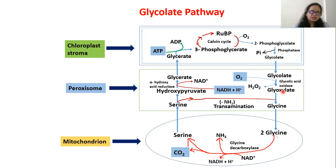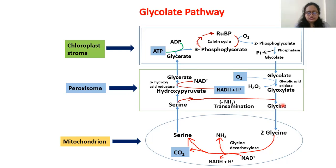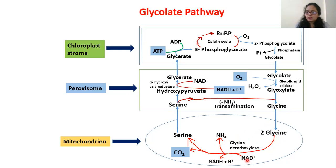Then that glyoxylate converts into glycine by a process known as transamination, meaning an NH2 group is added. That glycine then enters the mitochondria. In mitochondria, two molecules of glycine, in the presence of the enzyme glycine decarboxylase, release one CO2 molecule and one ammonia molecule. Glycine decarboxylase removes one CO2 from the glycine molecule.